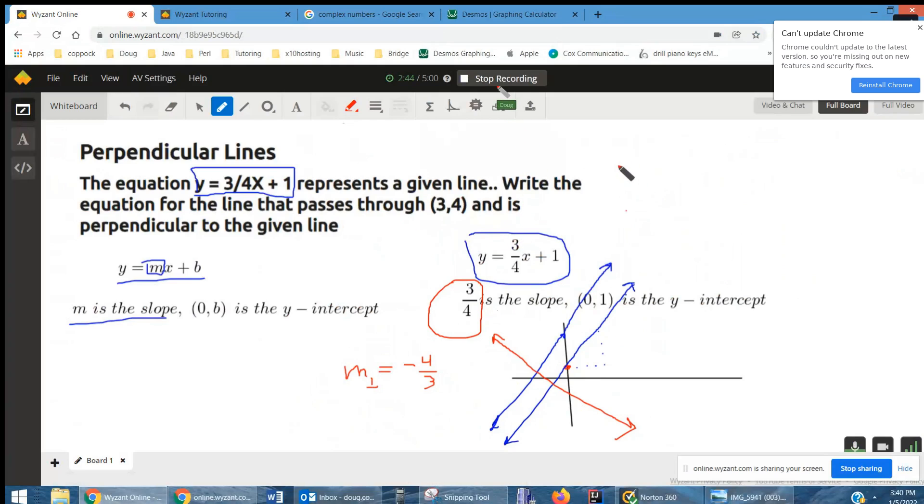And to do that, we're going to use point-slope, which is a formula that looks like this, where x sub 1, y sub 1 stands for the point that the line passes through, and m is the slope.